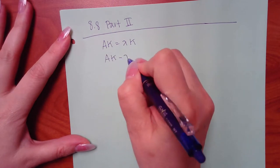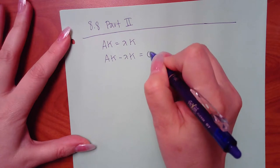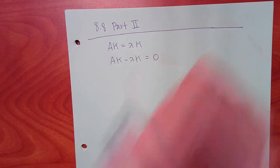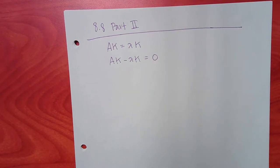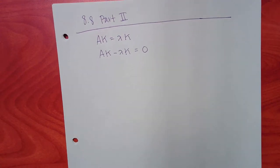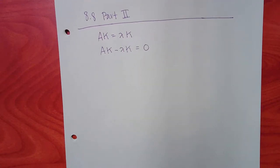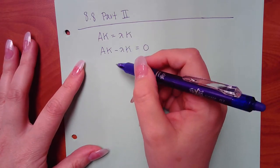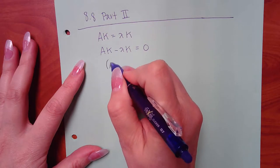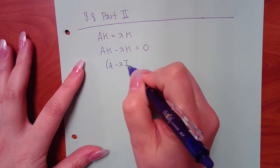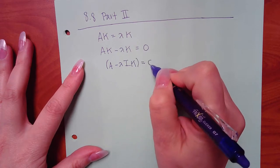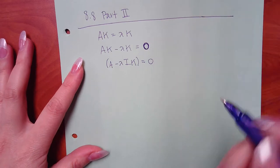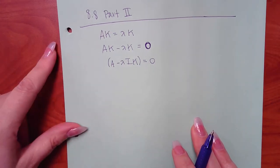You could subtract that term over and get the zero vector — we use bold print to make it dark because it's a vector, not the number zero. You could rewrite this as A minus lambda I times K equal to the vector zero.